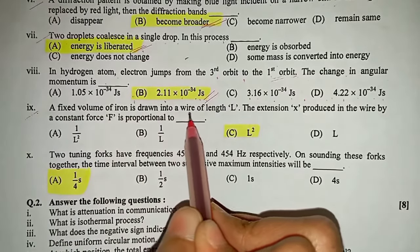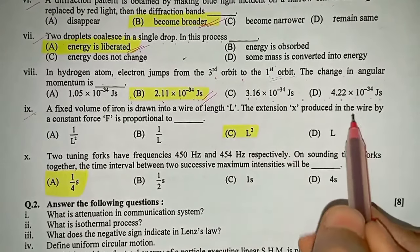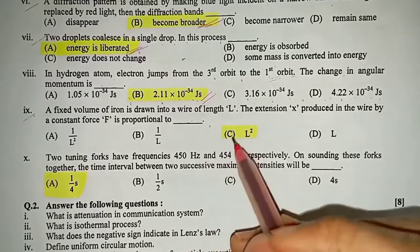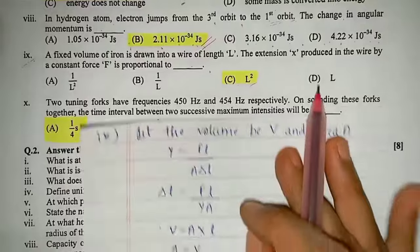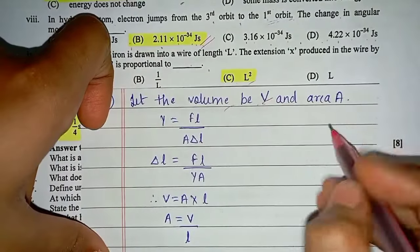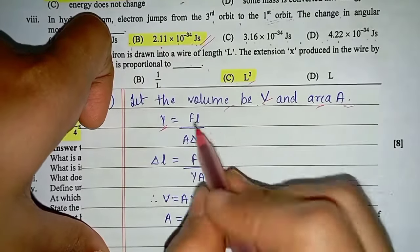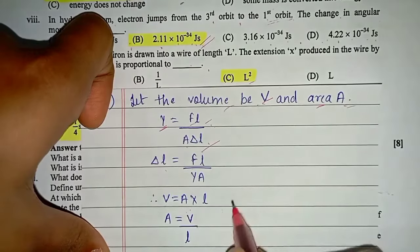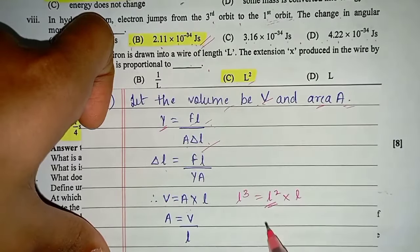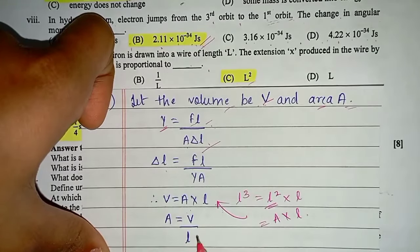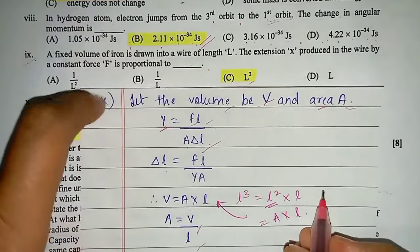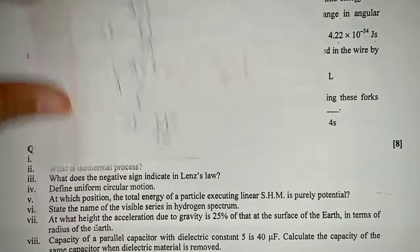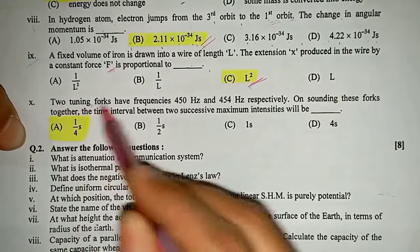Ninth: a fixed volume of iron is drawn into a wire of length l. The extension x produced in the wire by a constant force f is proportional to — the correct answer is option C, l². Here, using modulus = F·l/(A·Δl), and volume V = A·l, so area A = V/l, and substituting shows extension is proportional to l².